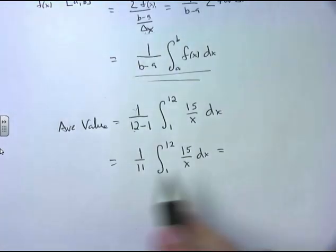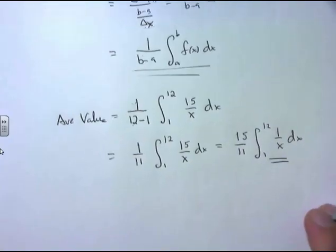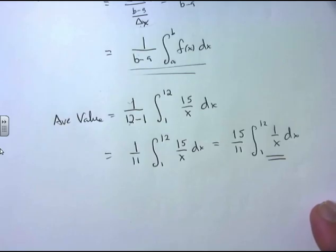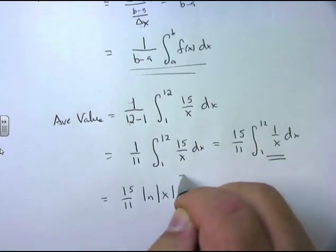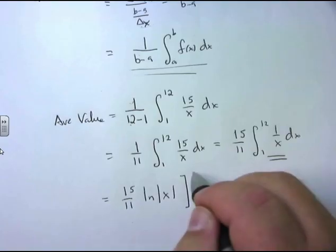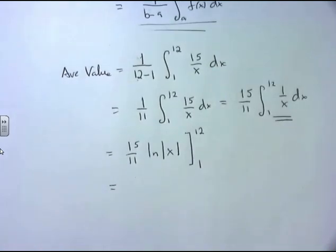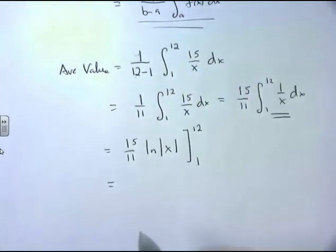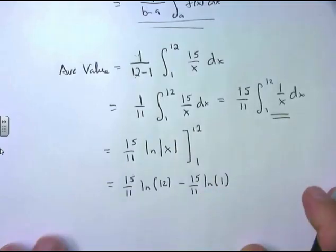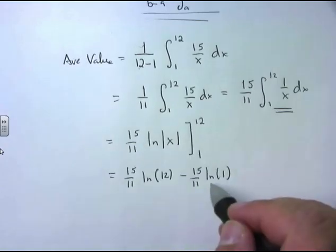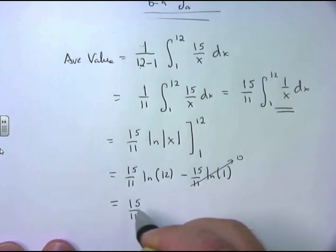The integral of 1/x dx is ln|x|, so this becomes (15/11) times ln|x| evaluated from 1 to 12. Using the second Fundamental Theorem of Calculus, we plug in the top bound minus the bottom bound: (15/11)·ln(12) minus (15/11)·ln(1). Since ln(1) = 0, that term drops out.